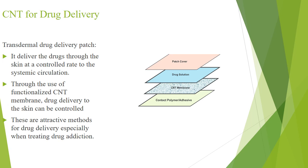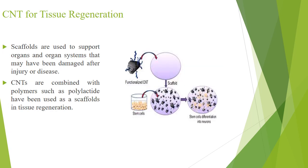Here in this picture, we can find the CNT membrane. On the surface, drug solution and patch cover. Under the CNT, contact polymer or some bioactive polymer, it's like a patch. These are attractive methods for drug delivery, especially when treating drug addiction. Through the use of functionalized CNT membrane, drug delivery to the skin can be controlled.